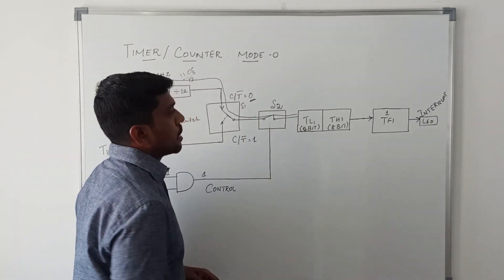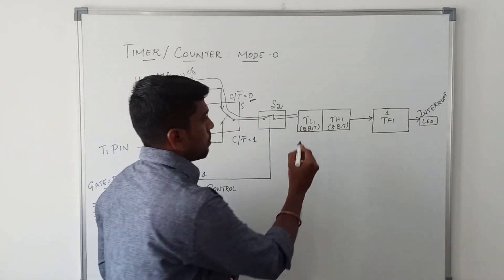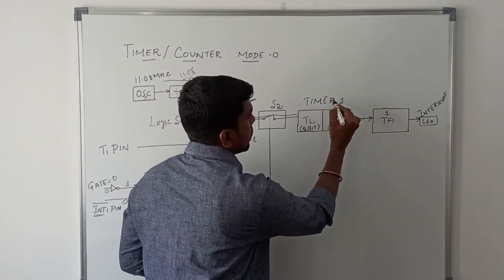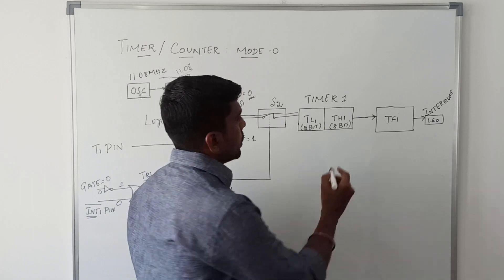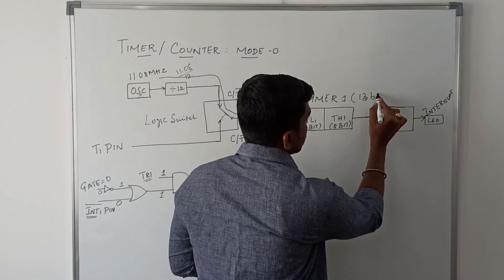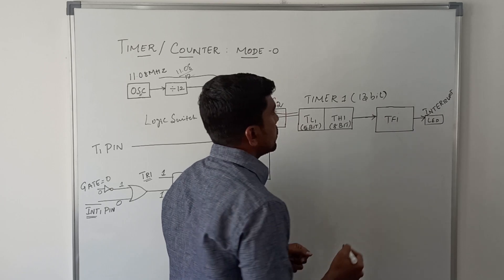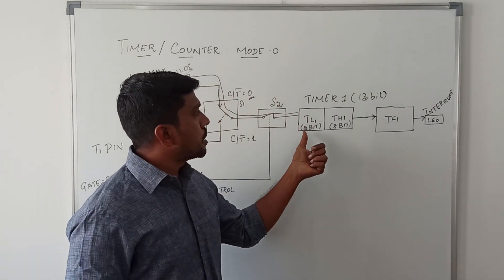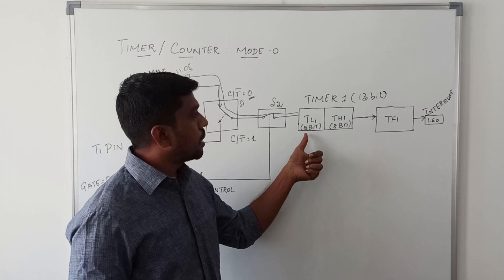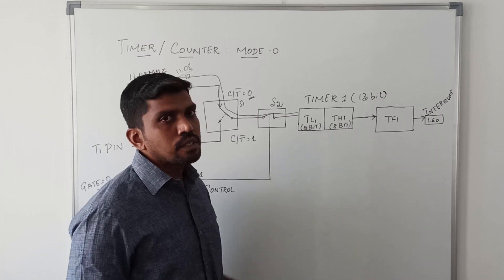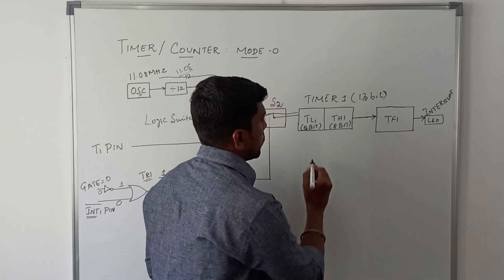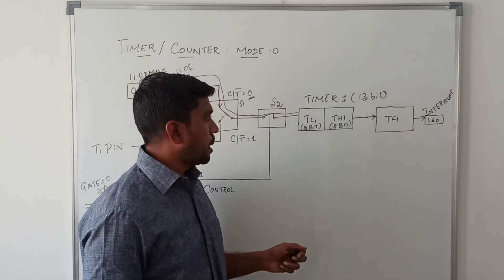Timer 1 consists of a 13-bit register. This 13-bit register is divided into two blocks: TH1 and TL1. TH1 is an 8-bit register and TL1 is a 5-bit register. The most significant 3 bits are ignored.